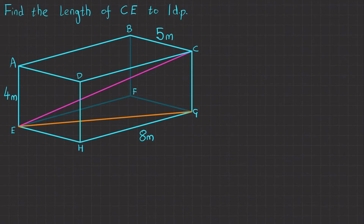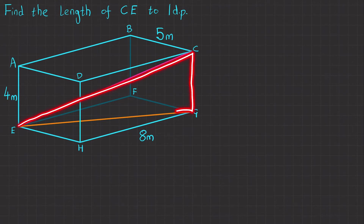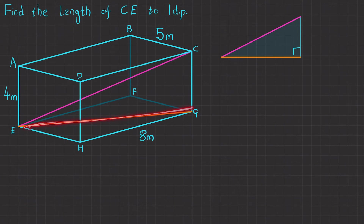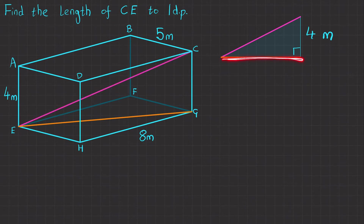Our second question looks a little bit trickier, but it's the exact same process. I'm showing it in this format because you may come across it like this. It says find the length of CE — so that's this pink line here. It's in 3D space so we can't calculate it as it is currently. If we extract it as part of a 2D right-angled triangle, we'll draw that out. We don't know the pink line or the orange line yet, but we do know this length — because it's a cuboid this must be the same length, so we've got 4 meters. In order to find the pink line, we need to find the value of this orange line first.